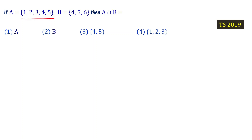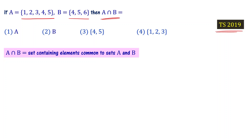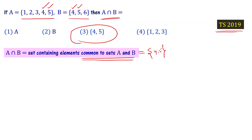If A is a set of elements {1, 2, 3, 4, 5} and B is a set of elements {4, 5, 6}, then what is A intersection B? This is from a 2019 set question. The elements common to both sets A and B are 4 and 5. So A intersection B = {4, 5}. Choice 3 is the right answer.